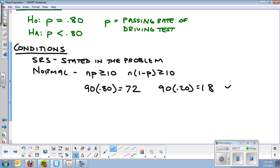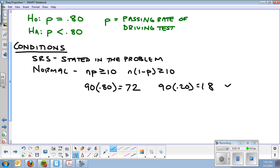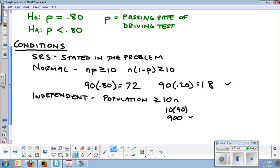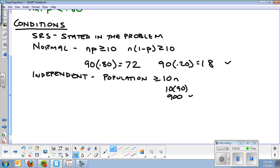And the last one we check is independent. That is the population greater than or equal to 10N. 10 times 90 is 900. And we can go ahead and say that there are more than 900 teenagers in this city.